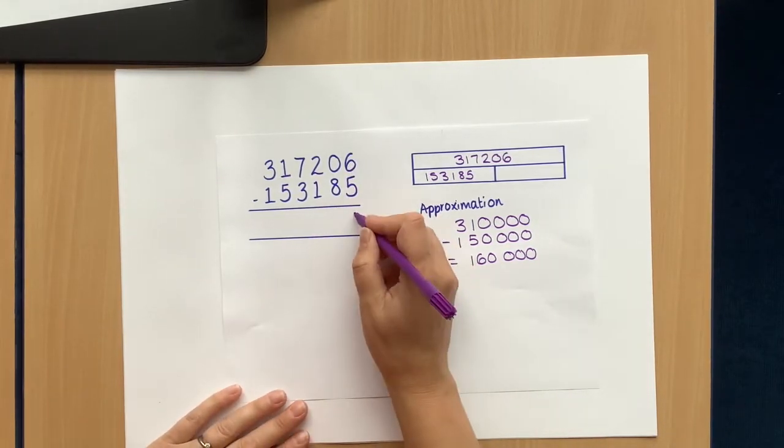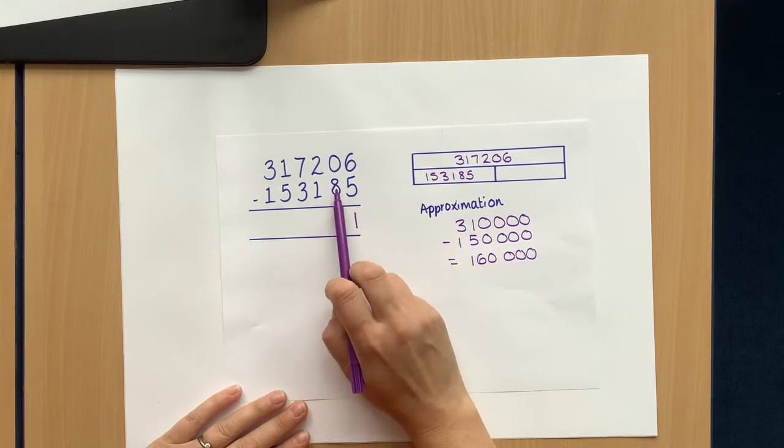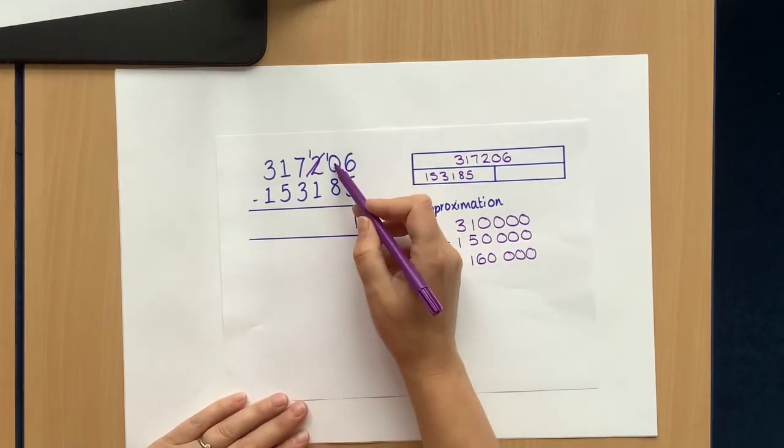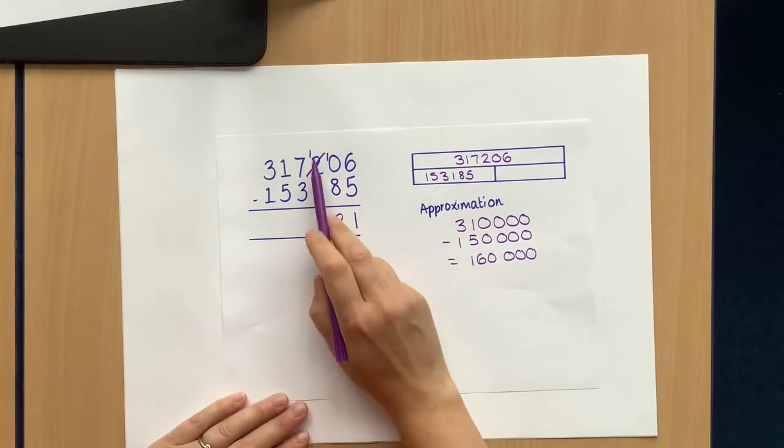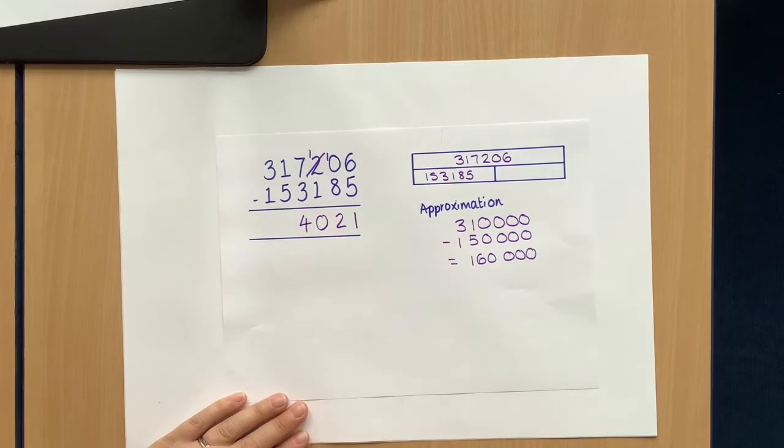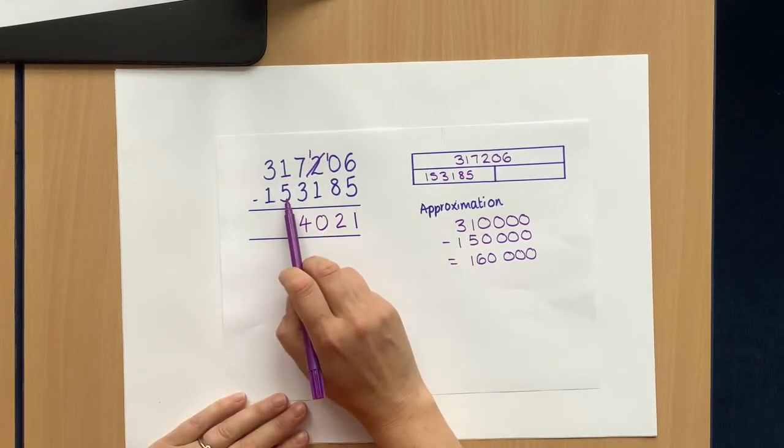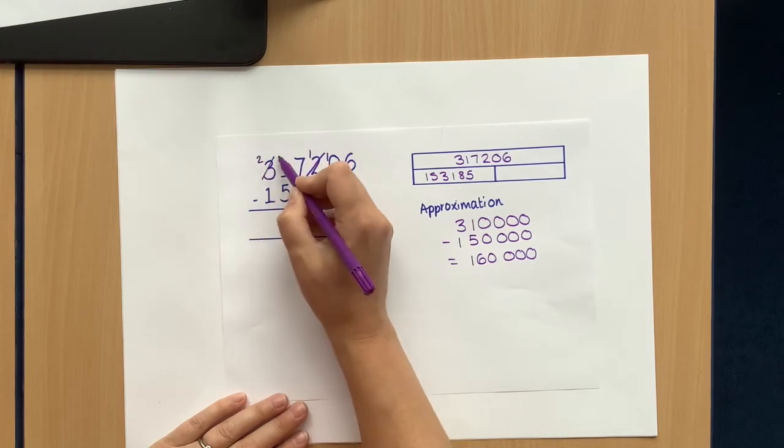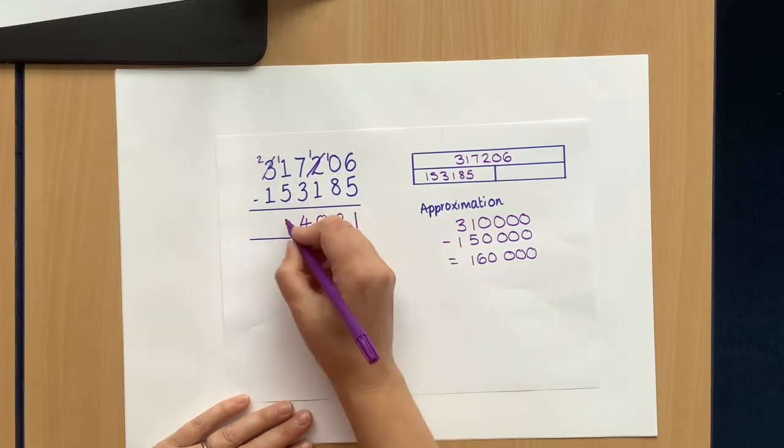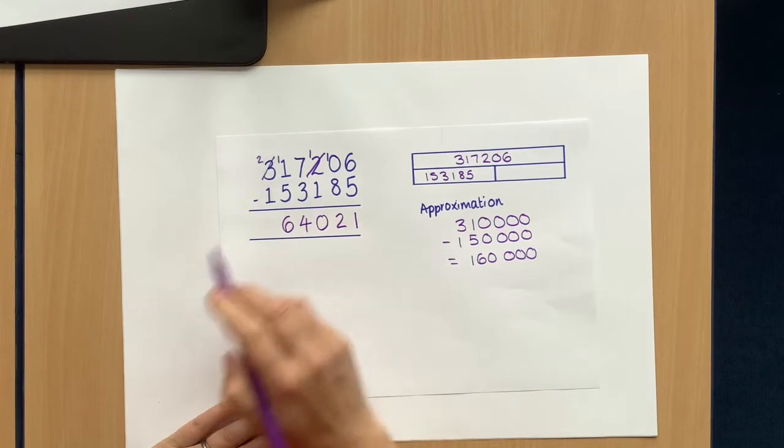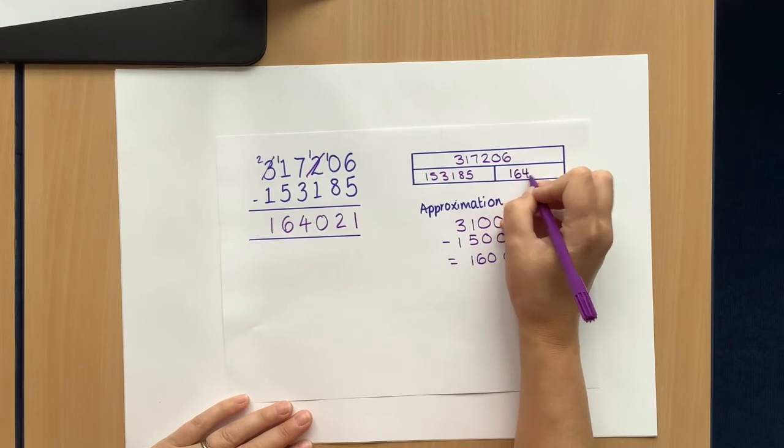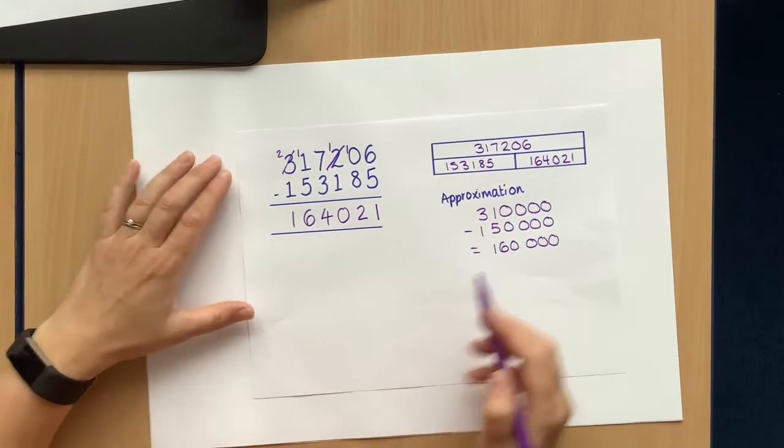Let's do it. One's first. 6 take away 5 is 1. Tens. 0 tens take away 8 tens, I can't do that. I need to exchange one of these hundreds, leaving one behind. Now I've got 10 tens. 10 tens take away 8 tens is 2 tens. 100 take away 100, that leaves me with nothing. 7,000 take away 3,000 is 4,000. 10,000 take away 50,000, can't do that. I need to do an exchange. So I've got 11 ten thousand take away 5 ten thousand, leave me with 6 ten thousand. And then I've got 200,000 take away 100,000. So I think that's my answer, 164,021.